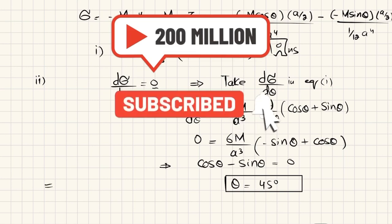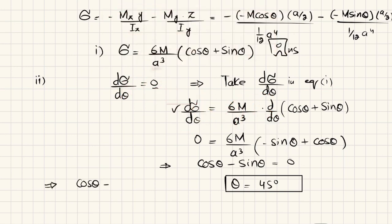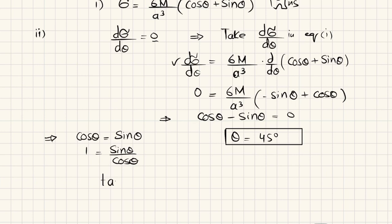From cosθ = sinθ, dividing both sides by cosθ gives tanθ = 1, so θ = tan⁻¹(1) = 45°. This is the answer to the second part.